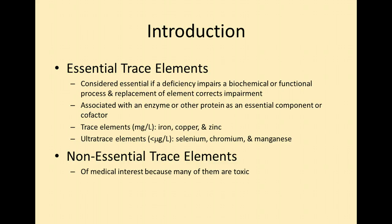Examples of trace elements include iron, copper, and zinc. Ultra trace elements are found in extremely small amounts in the human body — less than micrograms per liter. Milligrams are small but micrograms are even smaller. Examples include selenium, chromium, and manganese. While they are ultra trace elements, we still need them in our diet.